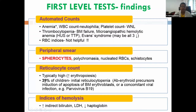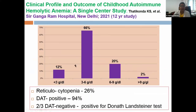Reticulocyte count is typically high, but in a significant proportion — about 40 percent of children — there may be initial reticulocytopenia. This occurs because antibodies may be acting against erythroid precursors in the bone marrow, causing apoptosis of erythroblasts, or there may be a concomitant viral infection like parvovirus B19. Therefore, reticulocytopenia should not completely rule out autoimmune hemolytic anemia. Other hemolysis indices include increased indirect bilirubin, increased LDH, and decreased haptoglobin.